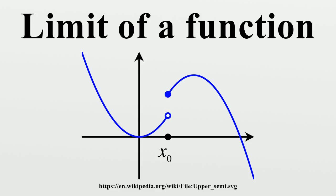For functions on topological spaces, suppose X and Y are topological spaces with Y a Hausdorff space. Let P be a limit point of Ω ⊆ X and L ∈ Y. For a function F: Ω → Y, it is said that the limit of F as X approaches P is L if the following property holds: for every open neighborhood V of L, there exists an open neighborhood U of P such that F maps U into V. Equivalently, there exists an open punctured neighborhood U of P such that F maps U into V. Note that the domain of F does not need to contain P; if it does, then the value of F at P is irrelevant to the definition of the limit.